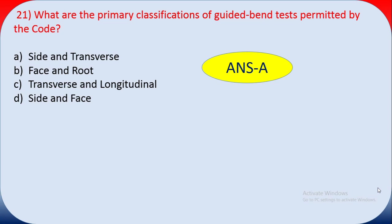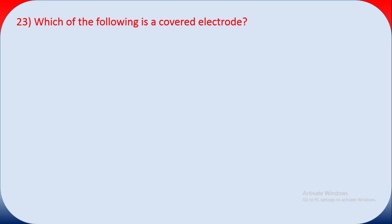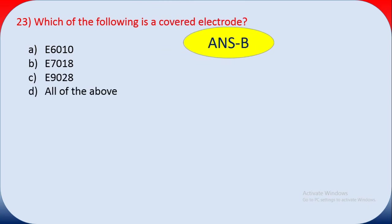Question twenty-two: a welder qualified by welding in the 5G position is qualified for what positions on plate? There are four options A, B, C, D. The correct answer is C — vertical and flat positions on plate.